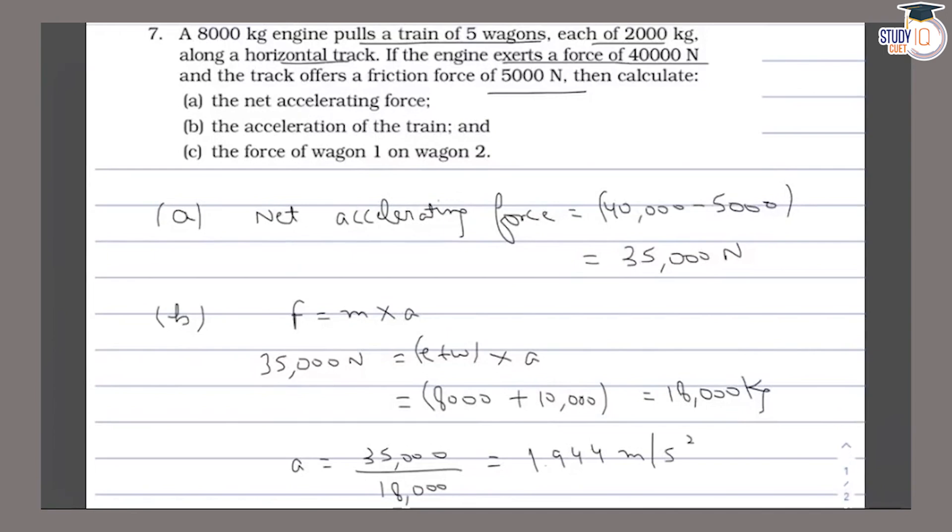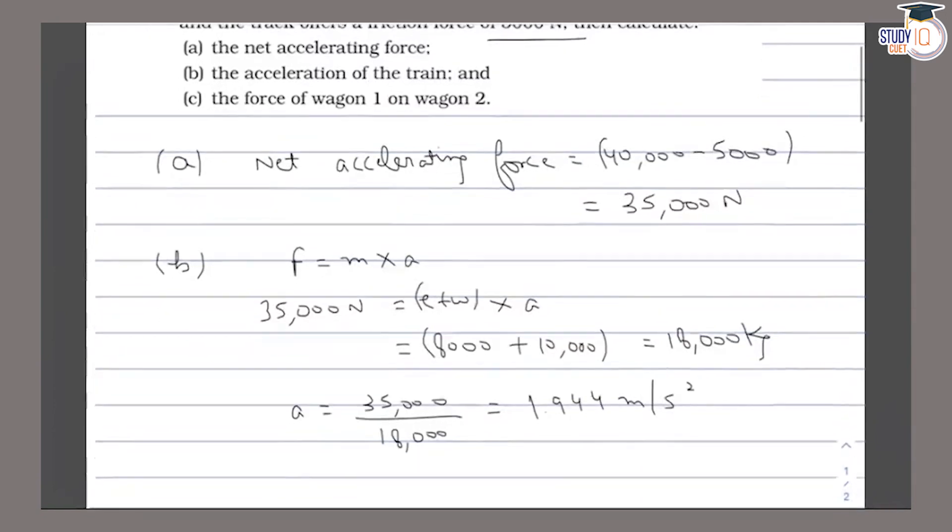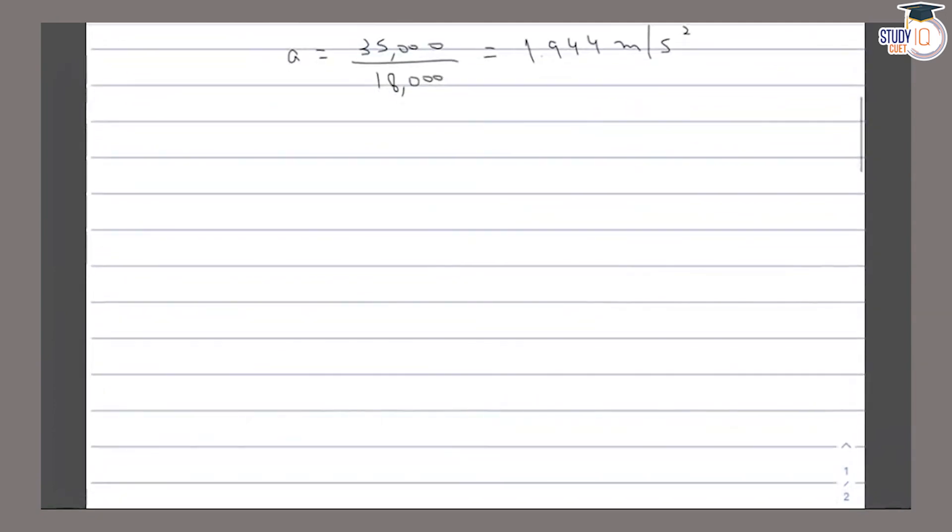Then we have to find the force of wagon 1 on wagon 2. For part C, we have total 5 wagons. We have 1, 2, 3, 4, 5, all connected.